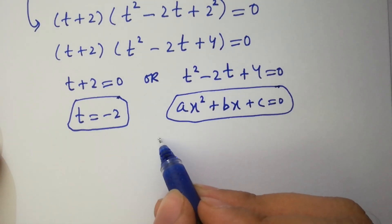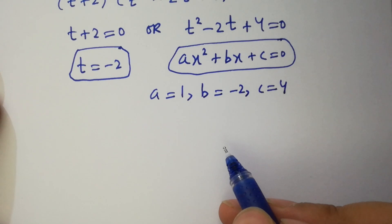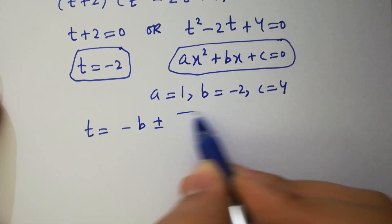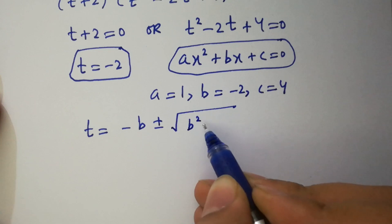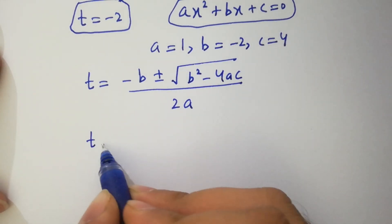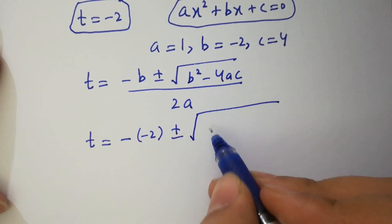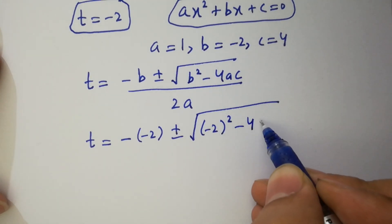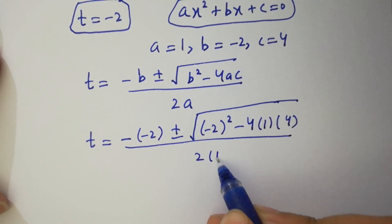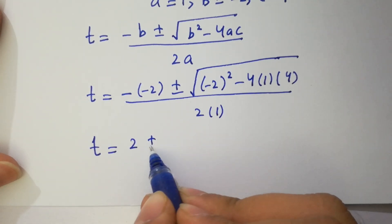By comparing: a equals 1, b equals minus 2, and c equals 4. Applying the quadratic formula: t equals minus b plus or minus square root of b squared minus 4ac, over 2a. So t equals minus of minus 2, plus or minus square root of minus 2 squared.